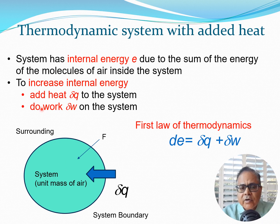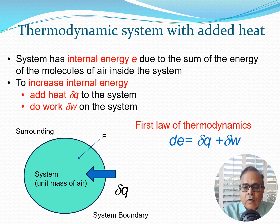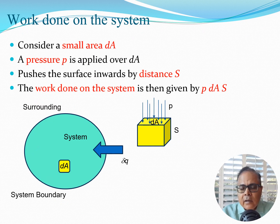To increase the internal energy of the system there are only two things we can do: we can add heat delta q, or we can do work delta w on the system. This leads to the most generic form of the first law of thermodynamics: dE = δq + δw.